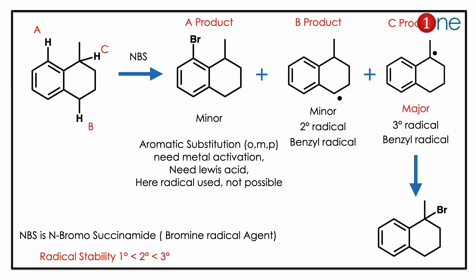Hydrogen A is difficult to break because it is on the benzene ring and needs activation for the reaction, so it is not our product. Then there is competition between B and C. B is a secondary benzyl radical, while C is also a benzyl radical but tertiary.